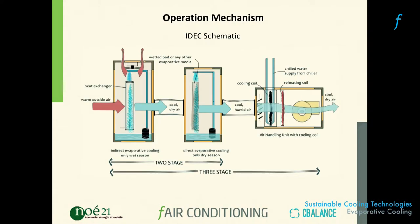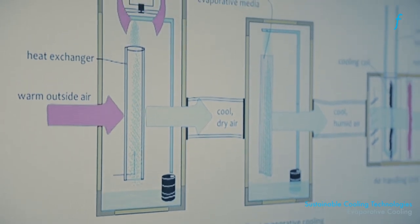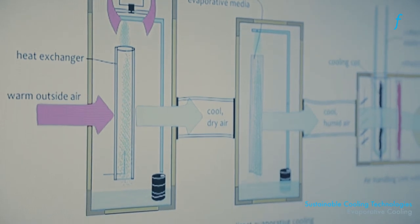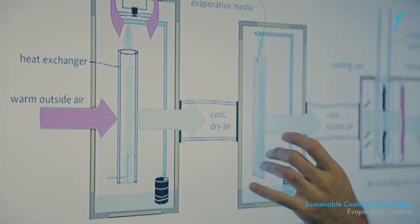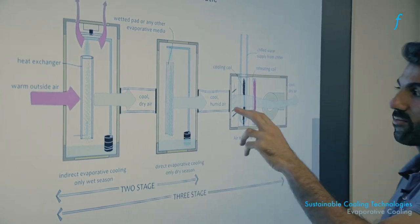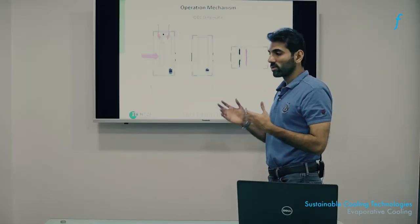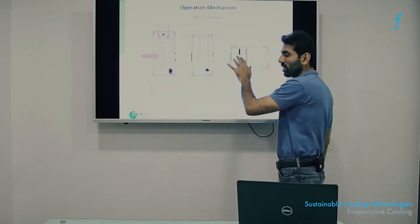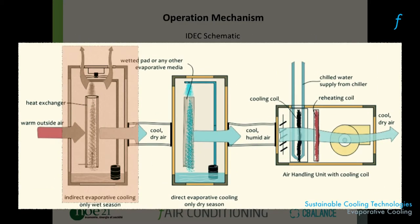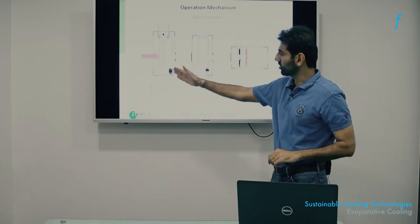A real-world IDEC system has the indirect evaporative cooling stage first, always followed by the direct evaporative cooling stage — the psychrometric chart explains why this order is used and never reversed. For very humid conditions (like Chennai, Mumbai, or Kolkata), a conventional AC unit can be added as a third stage. This creates an indirect-direct hybrid cooling system that can meet cooling needs throughout the year for any region in India. Each of these units will be understood separately.